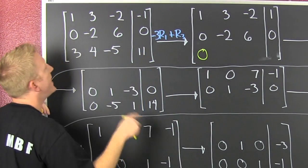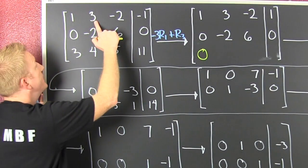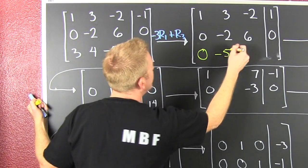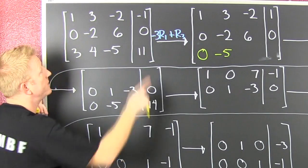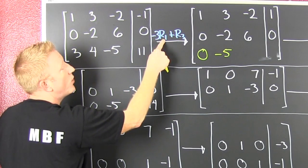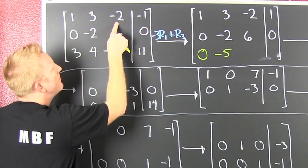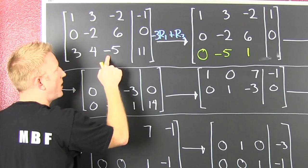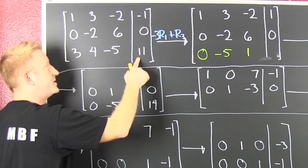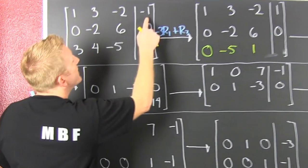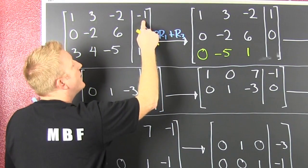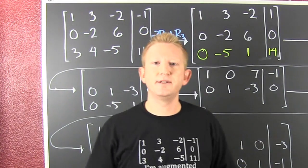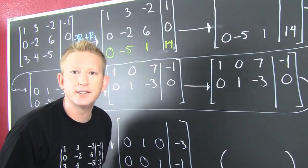The desired effect. Minus 3 times 3 is minus 9; minus 9 plus 4 is minus 5. Minus 3 times minus 2 is 6; 6 plus minus 5 is 1. Don't forget about the answer column of your augmented matrix — minus 3 times 1 is minus 3; minus 3 plus 11 is 14. Nice. I killed that column.